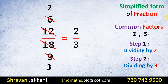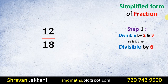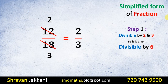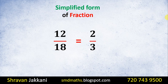There is also a simpler way to do the same thing. If we directly use 6 as the common factor: 6 times 2 is 12 and 6 times 3 is 18, so we get 2 by 3 in one step. So 12 by 18 and 2 by 3 is the simplified form of the fraction.